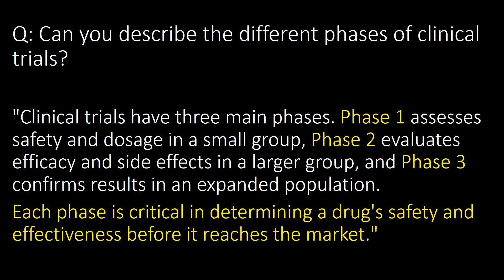Can you describe the different phases of clinical trials? Clinical trials have three main phases. Phase 1 assesses safety and dosage in small groups. Phase 2 evaluates efficacy and side effects in larger groups. Phase 3 confirms results in an expanded population. Each phase is critical in determining a drug's safety and effectiveness before it reaches the market.